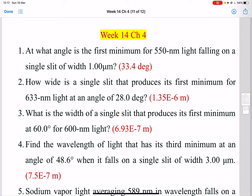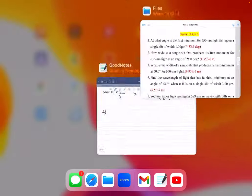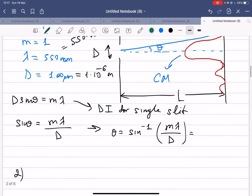So here, problem number two: How wide is a single slit that produces its first minimum for 632 nanometer light at an angle of 28 degrees? Okay, so let's write it down so we can use this.